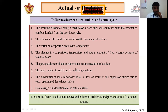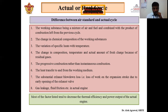Most of the eight factors listed either decrease the thermal efficiency or the power output of the actual engine. So when moving from the air standard cycle to the actual cycle, we see that thermal efficiency is decreased and power output is also decreased. The actual cycle therefore gives less thermal efficiency and less power output compared to the ideal cycle.